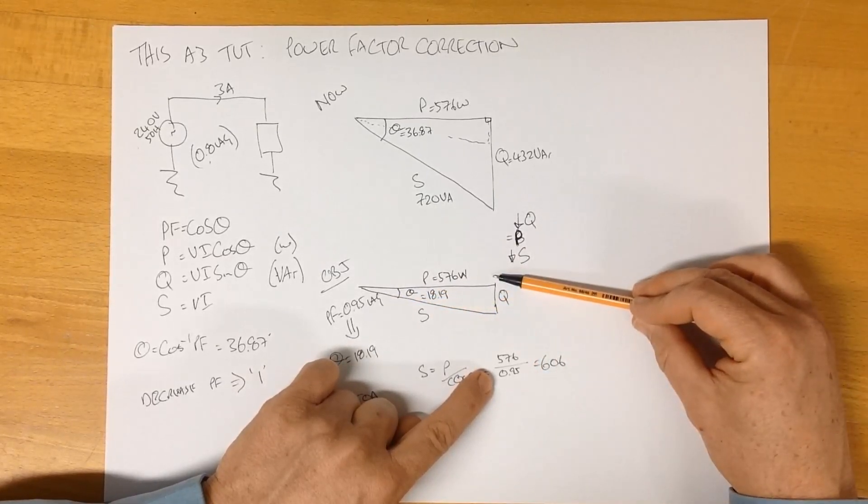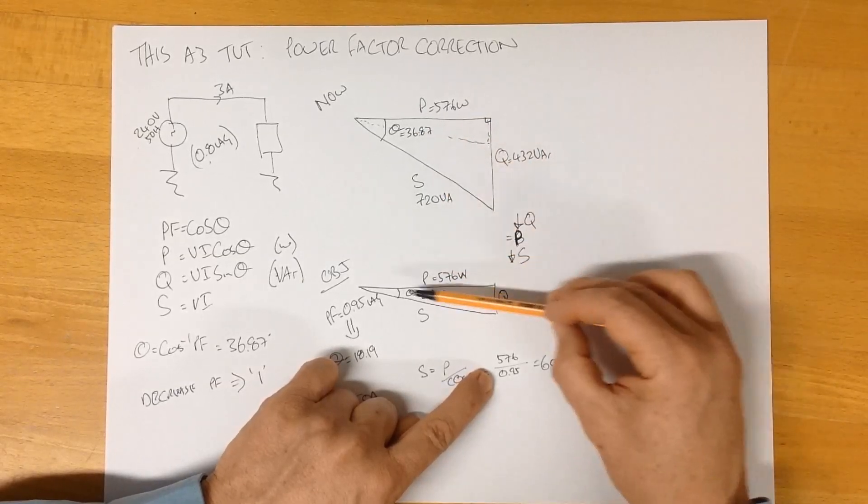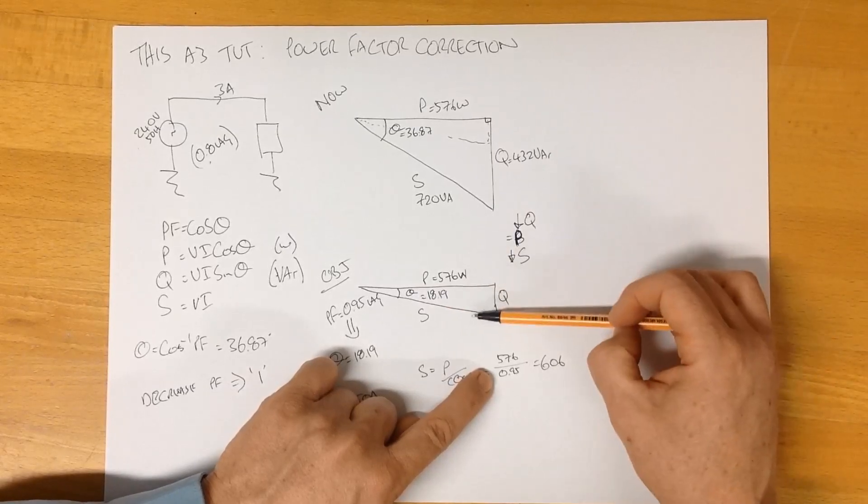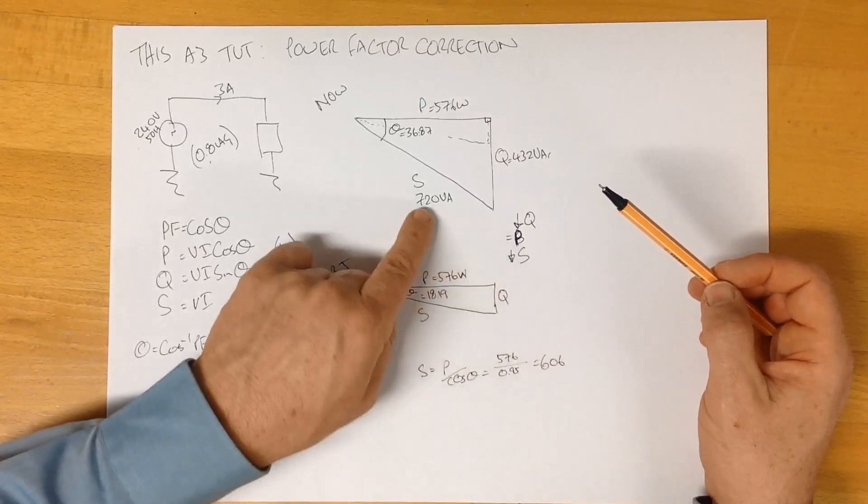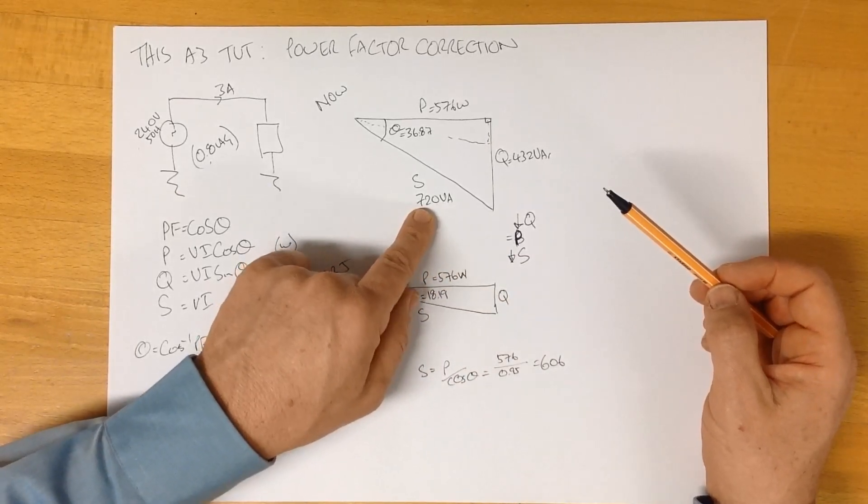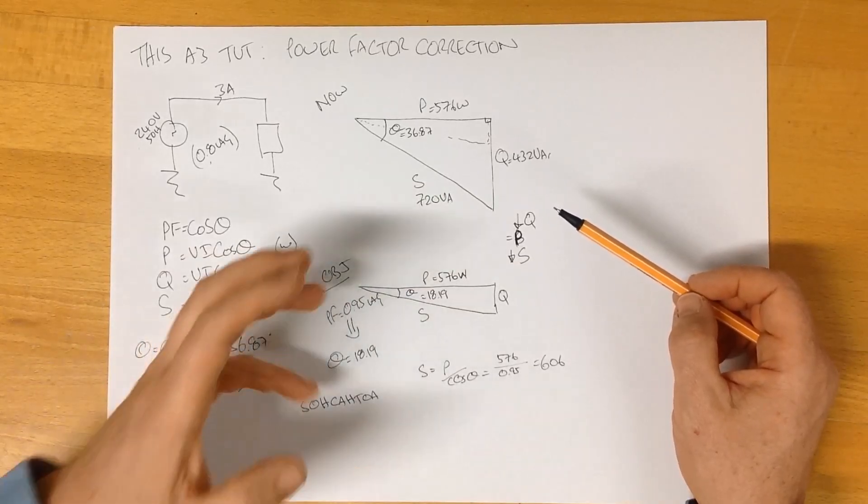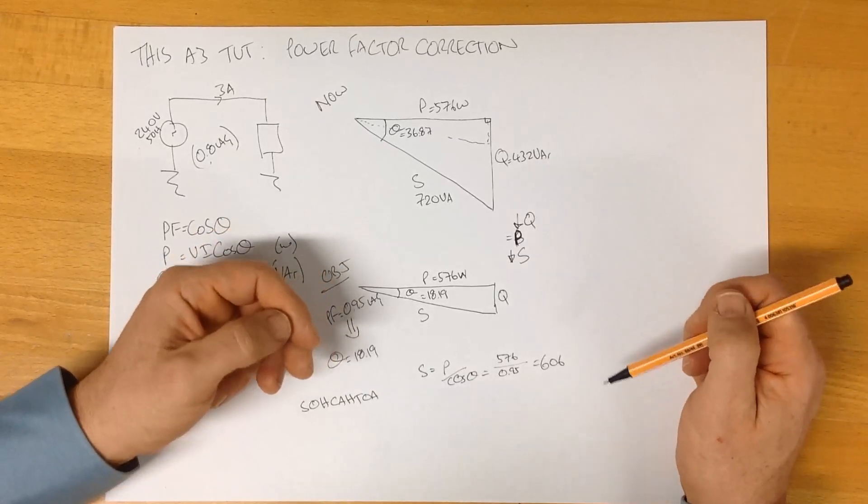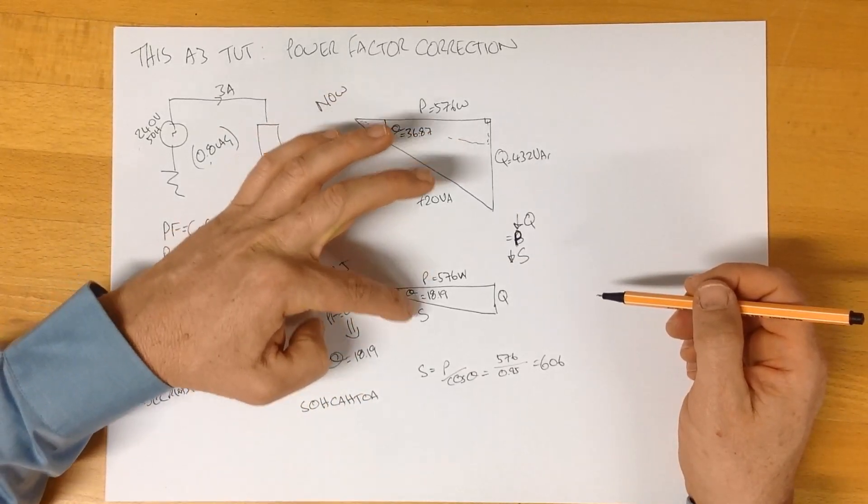This is our desired state. Our P is the same as our existing state. Our angle is less. We therefore know that our apparent power has got to be less. So, we can look at what we've just calculated, 606. What we had, 720. And we can see that it's less. So, we know we're on the right track with our calculations. We haven't done anything silly or stupid or made any simple arithmetical errors at this stage. We now know P, theta and S.